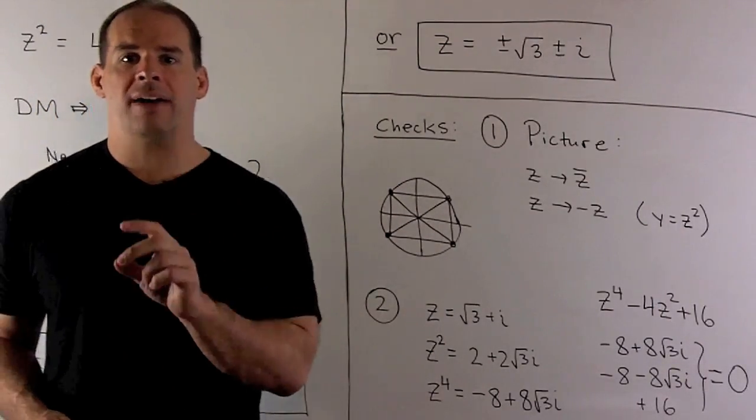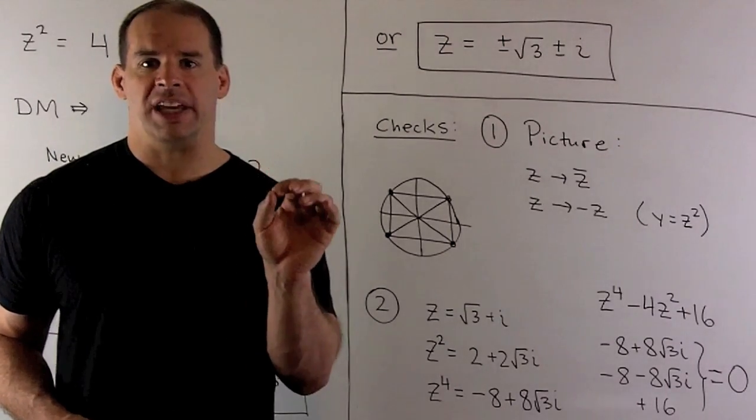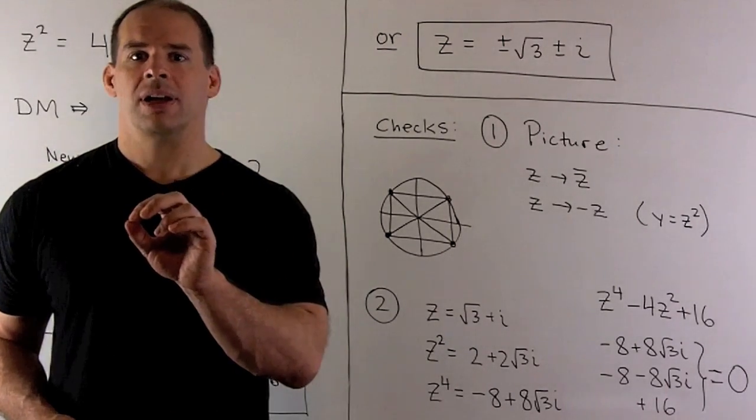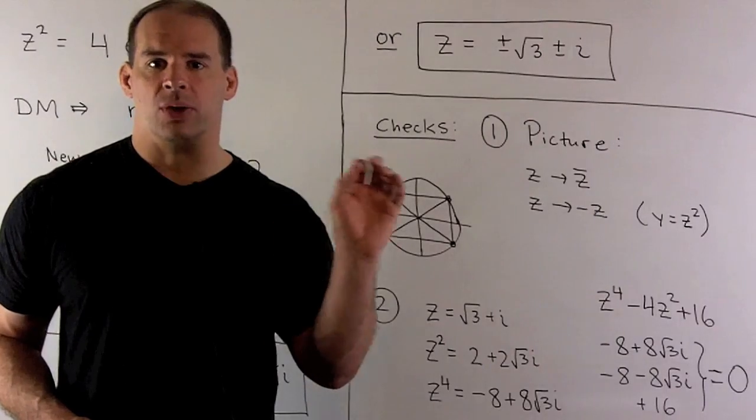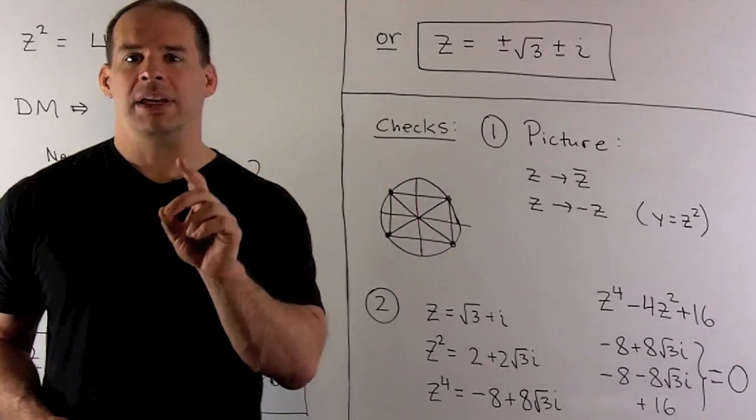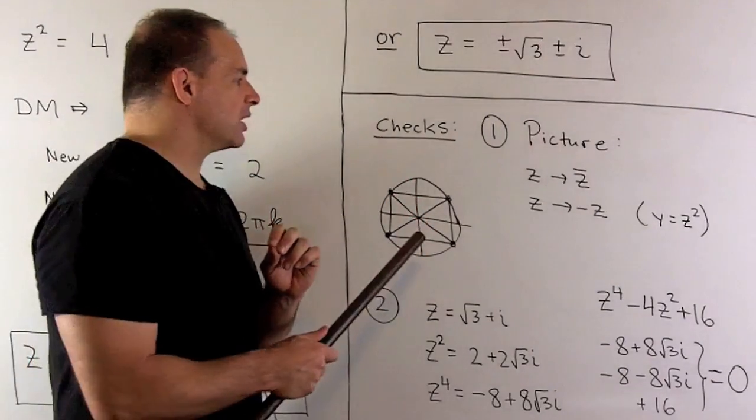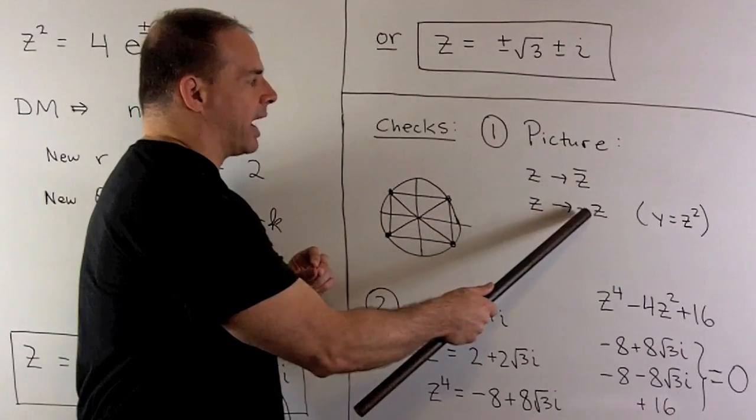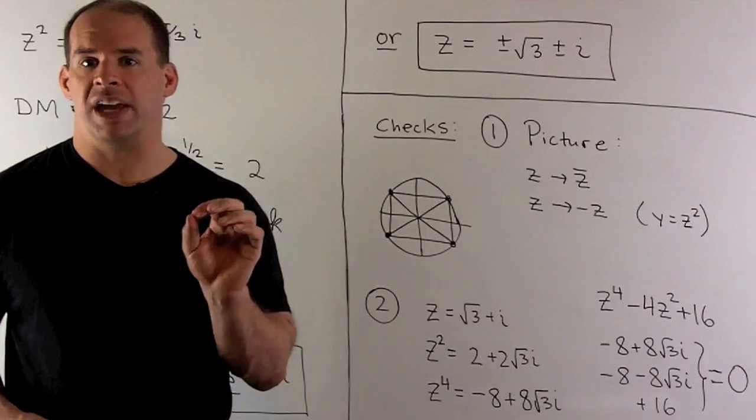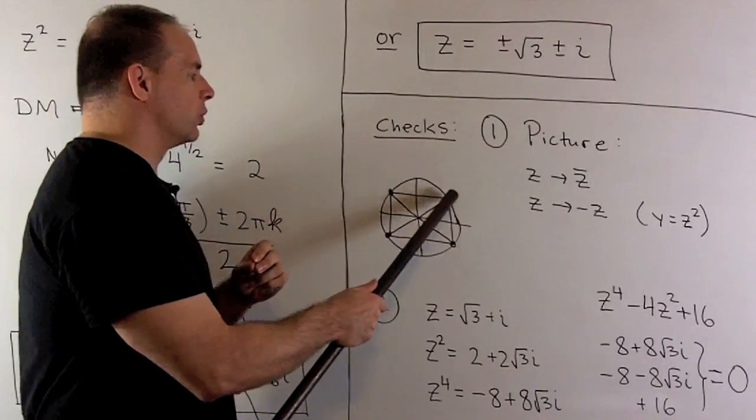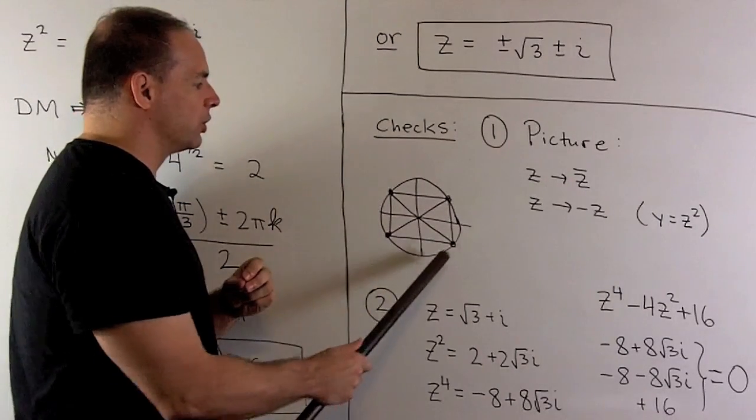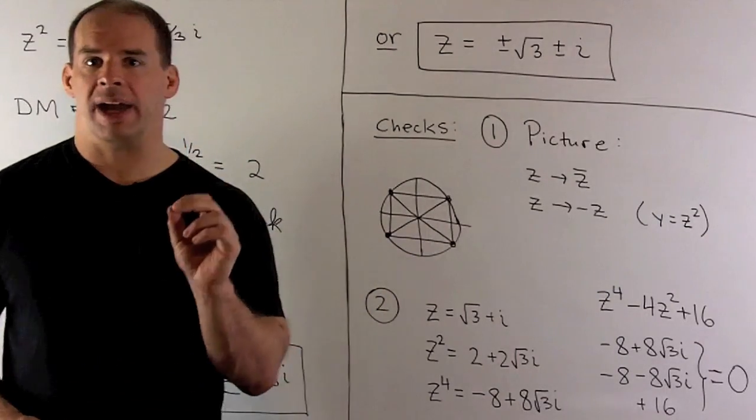We also have, since we have only even powers of z, if I have a solution, minus that solution gives me another solution. So that means our solution space is going to be closed under multiplication by minus one or rotation by 180 degrees. So this solution goes to here, this solution goes to here, and that also pans out.